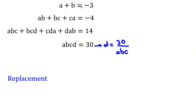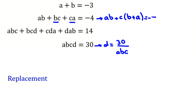Now I want to use a + b = -3. Looking at the second equation, ab + bc + ca = -4, I factor c from the last two terms: ab + c(b + a) = -4. Since a + b = -3, we substitute to get ab - 3c = -4.